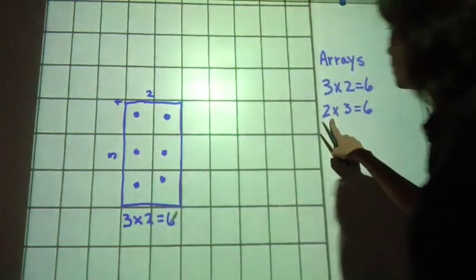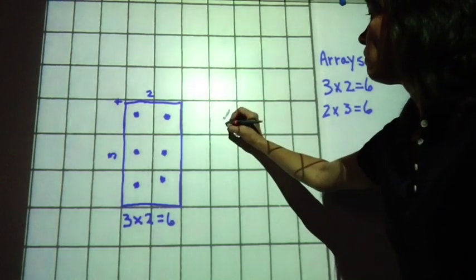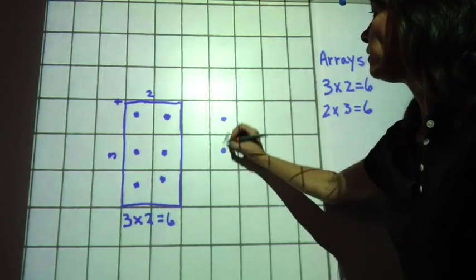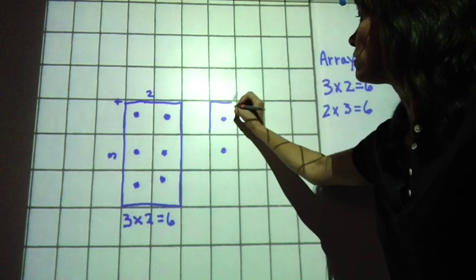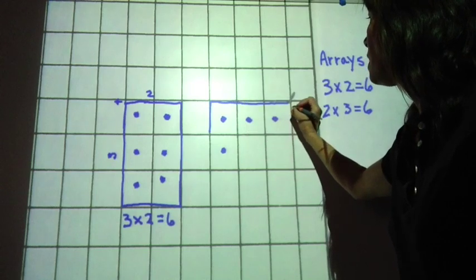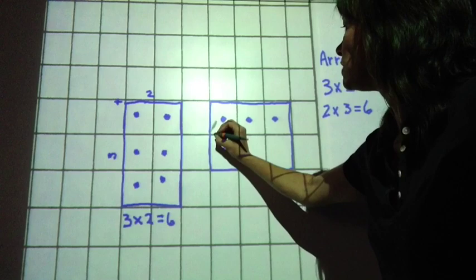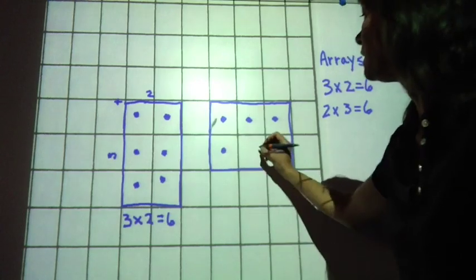We can also show 2 times 3 equals 6. 1, 2 down. Start my magic corner. 1, 2, 3 across. Probably the most common mistake that second graders make is they don't start counting in that magic corner. They skip over and they count 1 here.